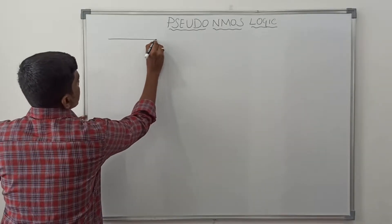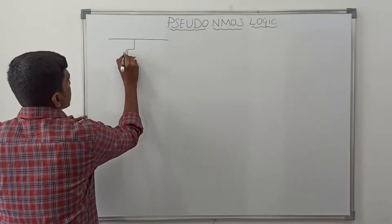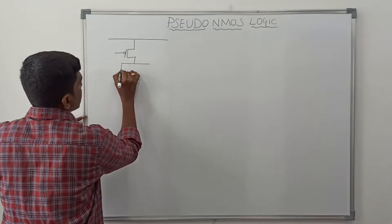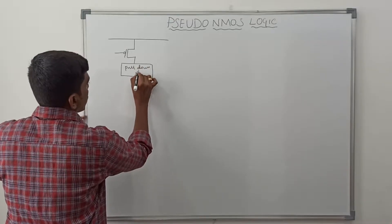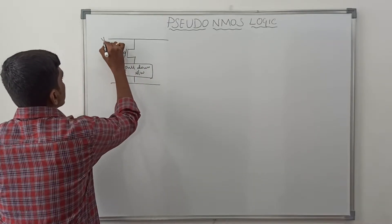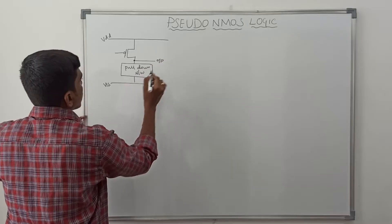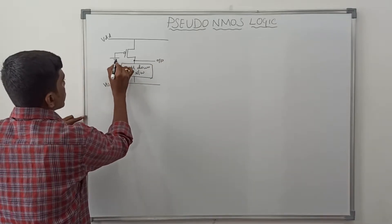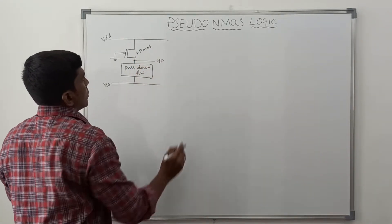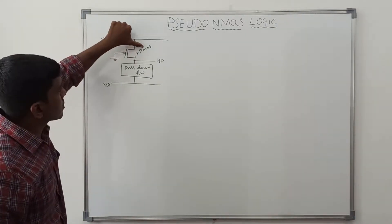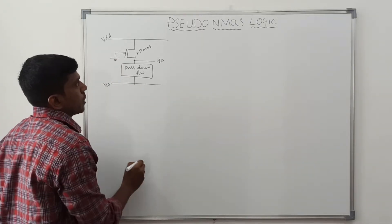Now I am going to draw the structure of pseudo-NMOS. This pseudo-NMOS involves one PMOS transistor and a pull-down network. The top line is VDD, the bottom line is VSS, and there is an output line. The PMOS transistor gate is connected to ground. In pseudo-NMOS logic, only one PMOS transistor is present and more than one NMOS transistor is present. This is the structure of pseudo-NMOS.